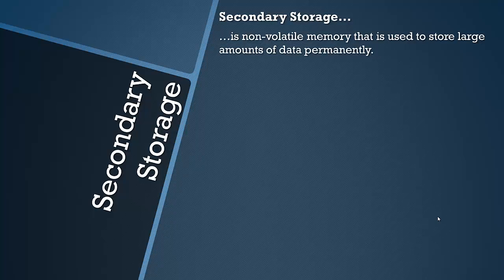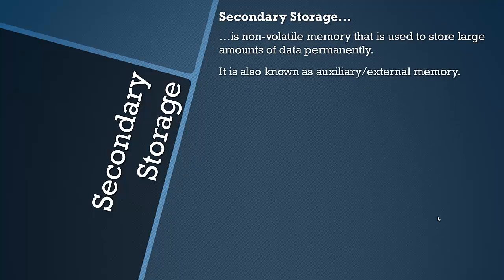I've been using memory and storage quite interchangeably. There is a difference in computer science — storage implies that it's there for a long time, but at this level you don't really need to understand the difference because it's fairly subtle. When talking about secondary storage, stick to the word storage. Memory is more to do with RAM and short-term memory. It's often called auxiliary or external memory or storage instead.